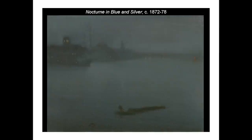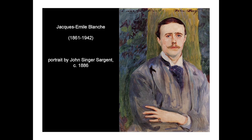Huysmans then takes up his tale again in 1882, when he says Whistler's dark, mysterious canvases began to materialize once more in Paris exhibitions, including the Nocturne now in the collection of the Yale Center for British Art, which was shown at the Petit Gallery in 1883. Nor was Huysmans alone in emphasizing an essentially private, sequestered Whistler in writing about him during the roughly ten years on either side of 1900.